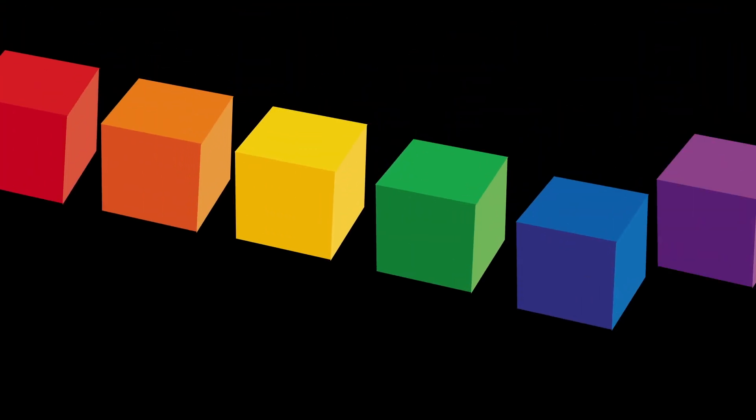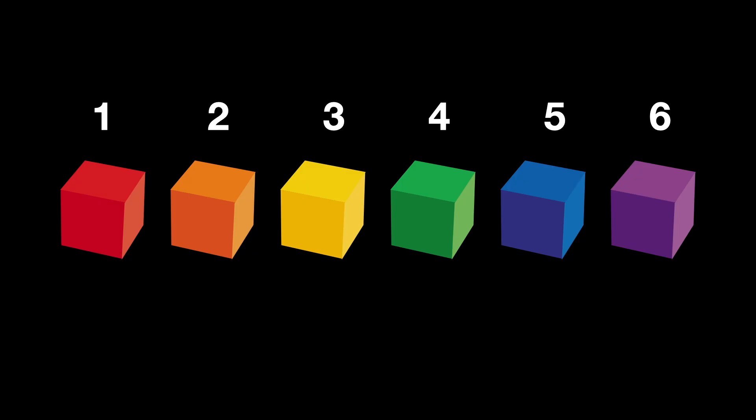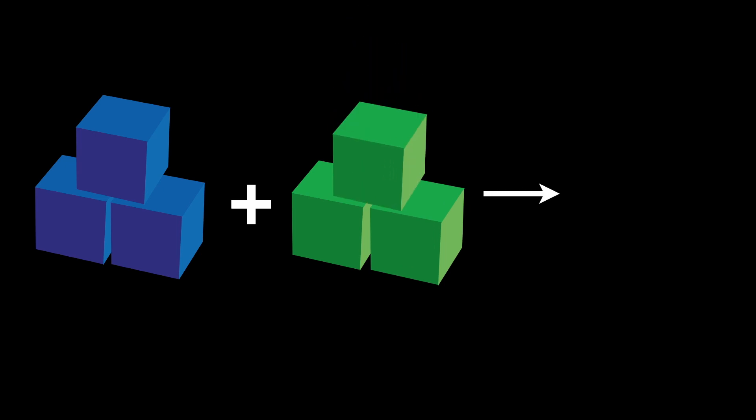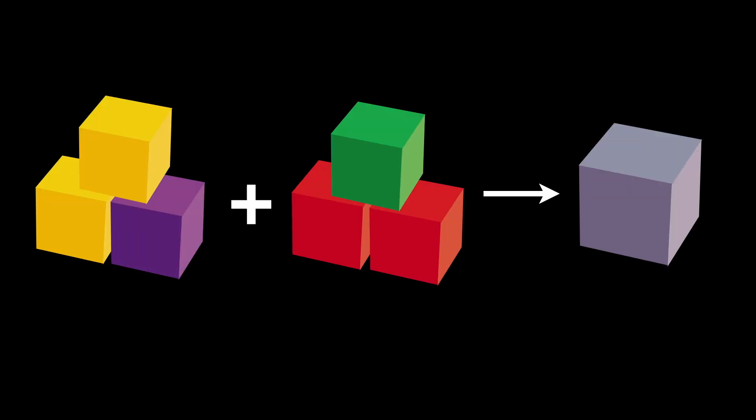Unlike elementary algebra, which deals primarily with numbers and specific operations like addition, subtraction, multiplication, and division, abstract algebra focuses on more than that. Imagine playing with different colored blocks where each color represents a different type of operation. In abstract algebra, you are less interested in the individual blocks or numbers, and more interested in how they interact based on their color or type of operation — for example, blue blocks combining with green blocks to always result in another green block. Abstract algebra tries to understand the rules of how these combinations work, no matter what the specific elements are. A classic example is group theory.